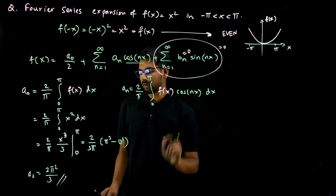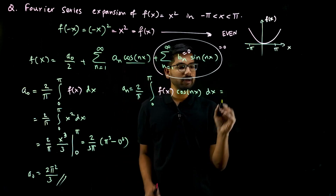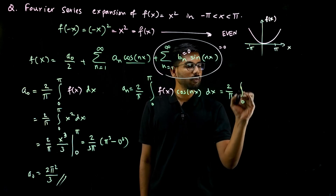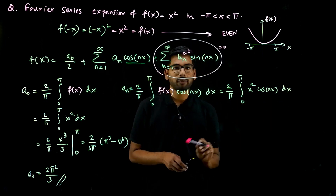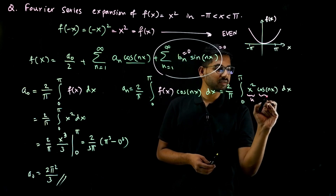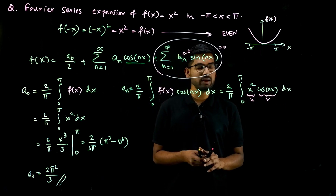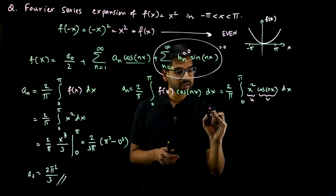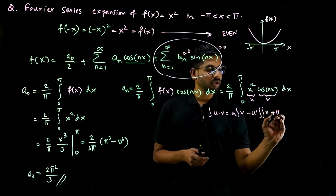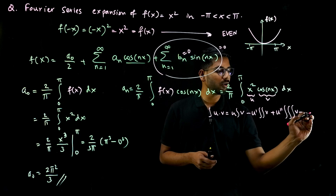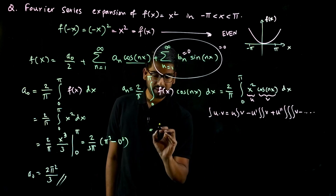So now we know bₙ equals 0 and a₀ equals 2 pi squared by 3. Let's find aₙ. Substituting f of x equal to x squared gives aₙ equal to 2 by pi, integration from 0 to pi of x squared cos nx dx. This integral involves two functions multiplied together. The formula for integration of u times v is: u times integral of v, minus u prime times the second integral of v, plus u double prime times the third integral of v, and so on until you reach zero.